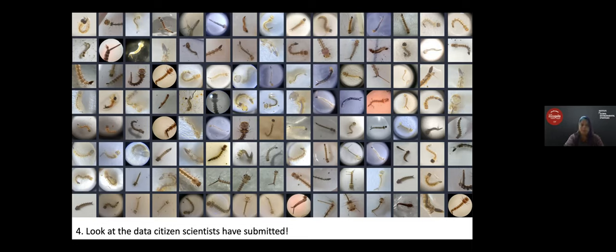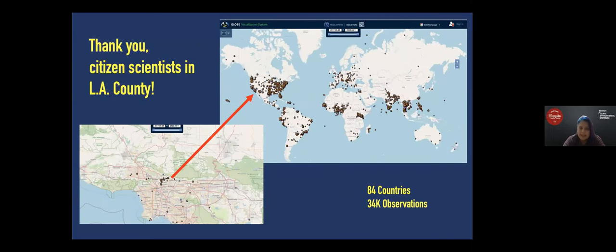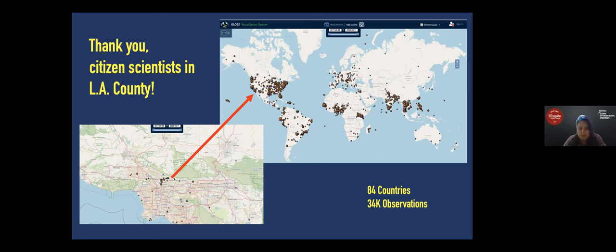This map shows all the data we've received. The close-up shows LA County — there have been a lot of citizen scientists in LA contributing mosquito measurements to GLOBE Observer. Worldwide, more than 84 countries have contributed mosquito data, totaling about 34,000 observations. Thank you to all of you who have checked out kits from the library and contributed your observations.